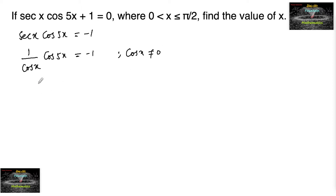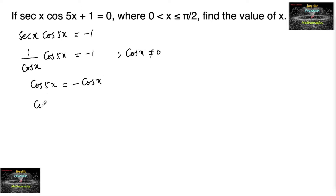So that cos 5x = -cos x. We can write this as cos 5x = cos(π - x).